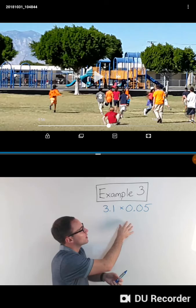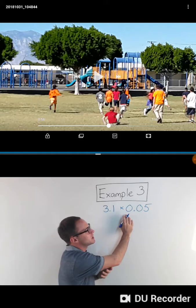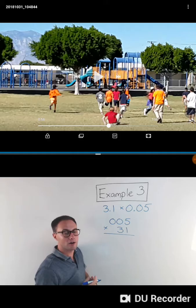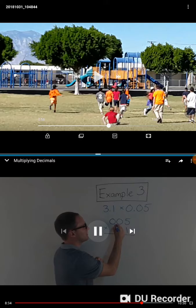Me, personally, I like to do whichever one has the most digits. I like to put that on top, but it doesn't matter. You can do it either way you want. So I'm gonna set this up as 005 times 31. Pretend the decimal points aren't there and set it up that way. Now that I've set it up, I'm gonna put them back so I don't forget.